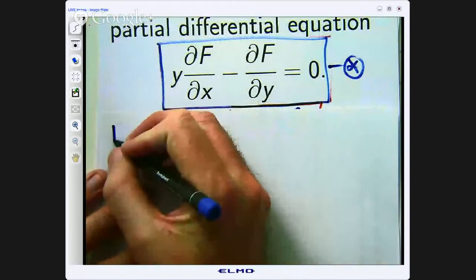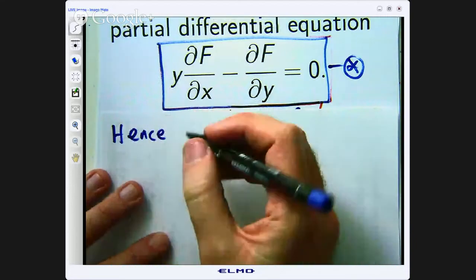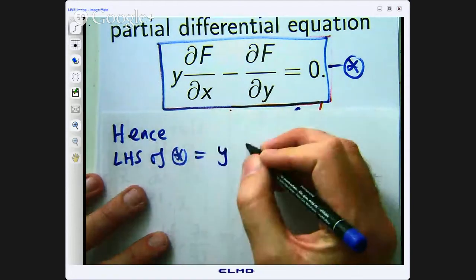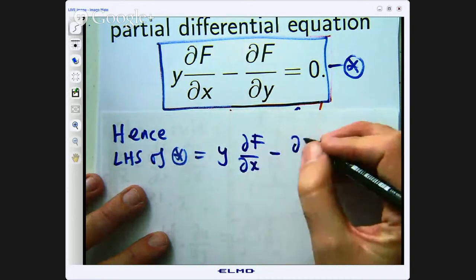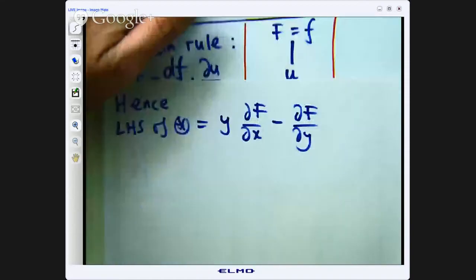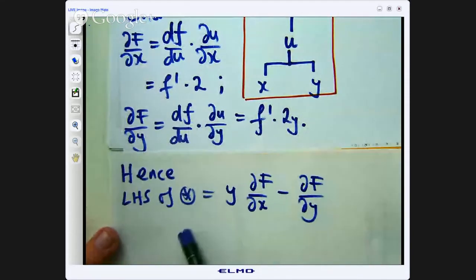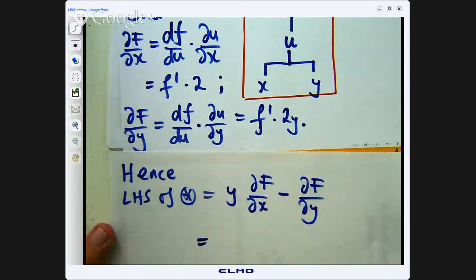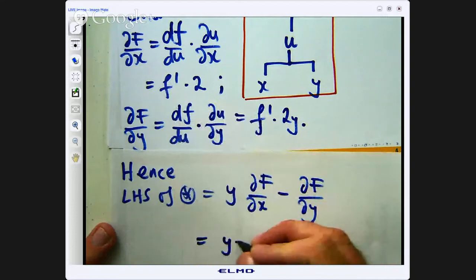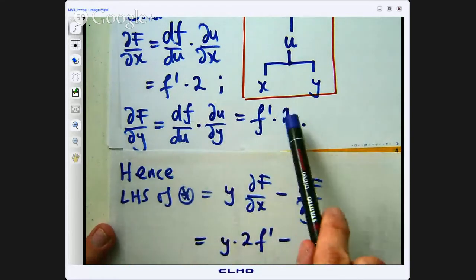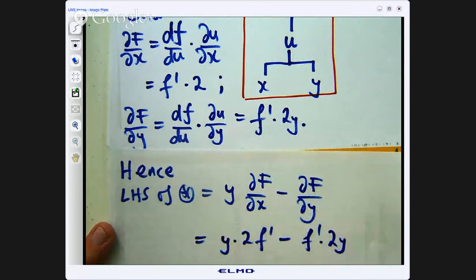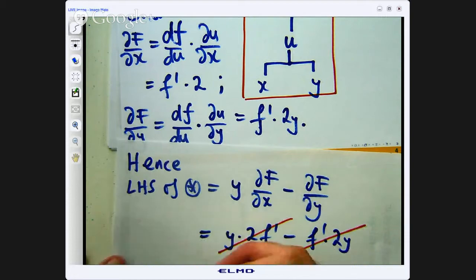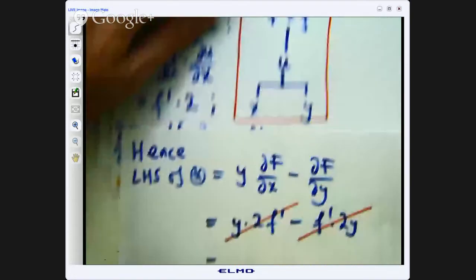So LHS stands for left hand side. Alright, so let's work out what we have here. We know that df/dx is that and df/dy is that. So let's keep that going. So it's going to be 2 times f' minus f' times 2y. Now if you look carefully at these two things they are the same. So they will cancel off and you will be left with 0.